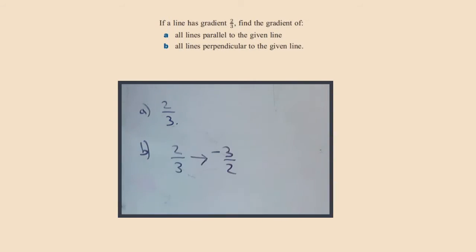And then we change the sign. If this would be negative to begin with, it will become positive. So the answer is three over two, and that's it.